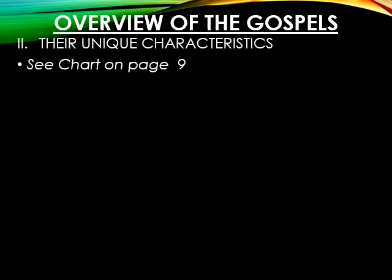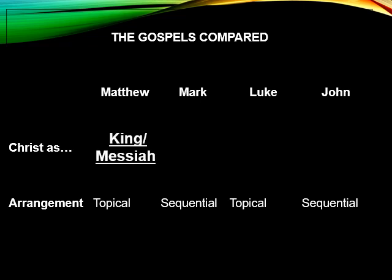Now let's look at the unique characteristics of each Gospel using a chart in your notes. All four Gospels present Christ in their own unique way. Matthew presents Christ as the King, the Messiah. Matthew is a very Jewish book, writing to a Jewish community to explain how Jesus truly was the King of Israel and the anointed Messiah.